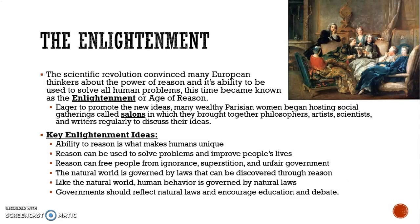There are main key Enlightenment ideas to keep in mind. First, the ability to reason is what makes humans unique. Second, reason can be used to solve problems, improve people's lives, and free people from ignorance, superstition, and unfair government. Third, the natural world is governed by laws that can be discovered through reason and the scientific method. Similarly, human behavior is also governed by natural laws. Finally, governments should reflect these natural laws and encourage education and debate.